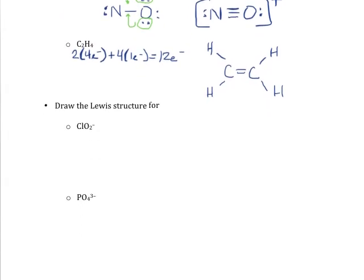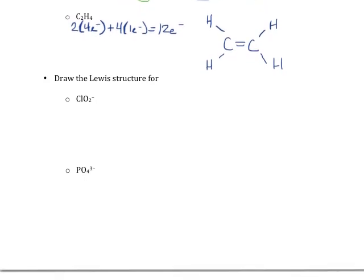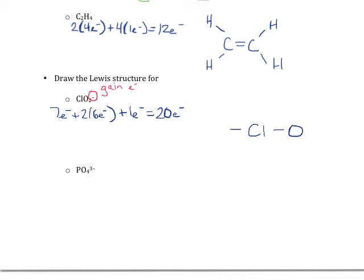Let's look at our last set, starting the same way we always do — by counting valence electrons. For the first one, chlorine brings 7 valence electrons, and there are 2 oxygen atoms each bringing 6. That negative charge means we have gained one electron, so we add one, giving us a total of 20 electrons. I'll put chlorine in the middle and attach the two oxygen atoms, using 4 electrons. I'll fill the octets on the outside atoms first, placing electrons 5 through 16, then put the remaining electrons 17 through 20 on the center chlorine.